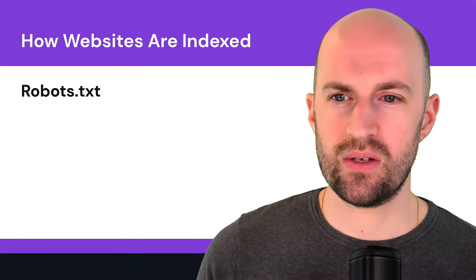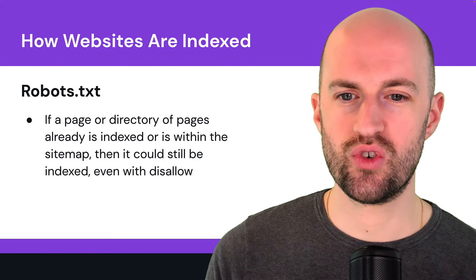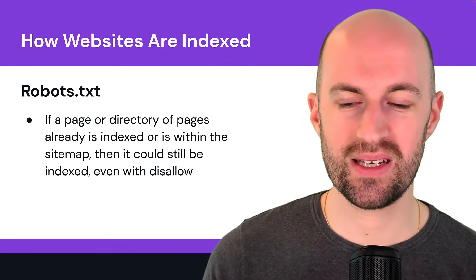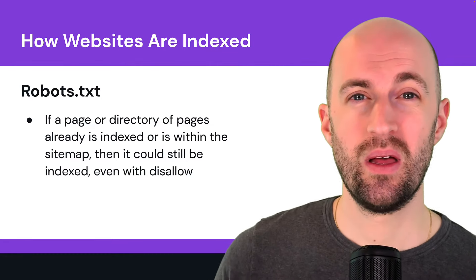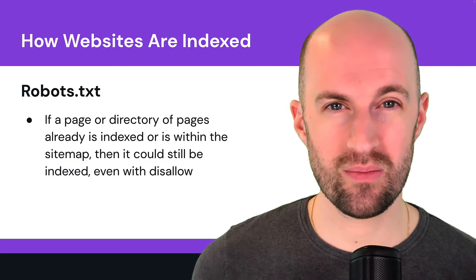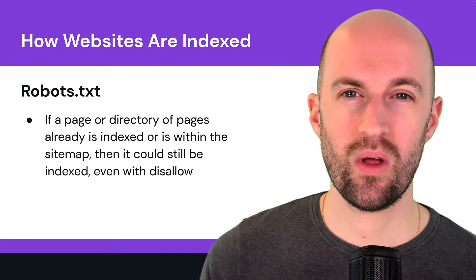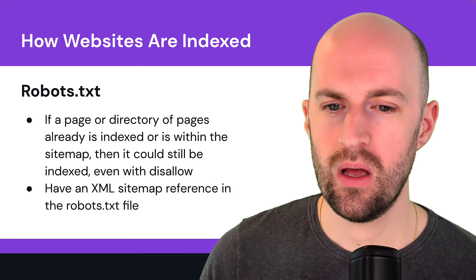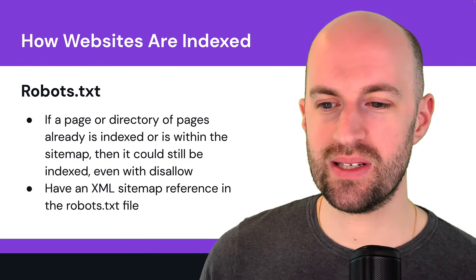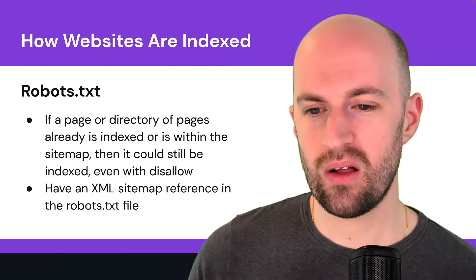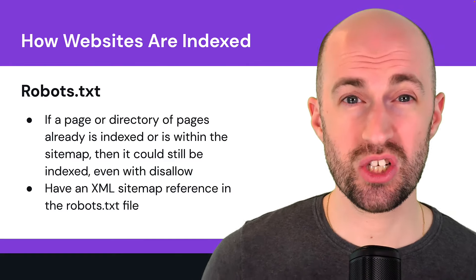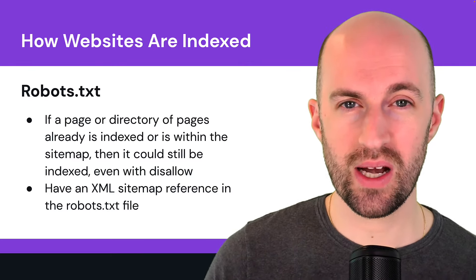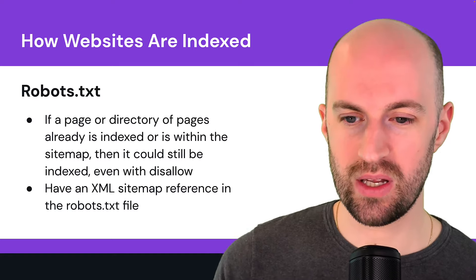If a page is already indexed, it could still remain indexed even with disallow — for example, if that page is in the sitemap or other links on your site lead to it. Make sure to include an XML sitemap reference in your robots.txt file, which also helps search engines discover your sitemap if they haven't already.